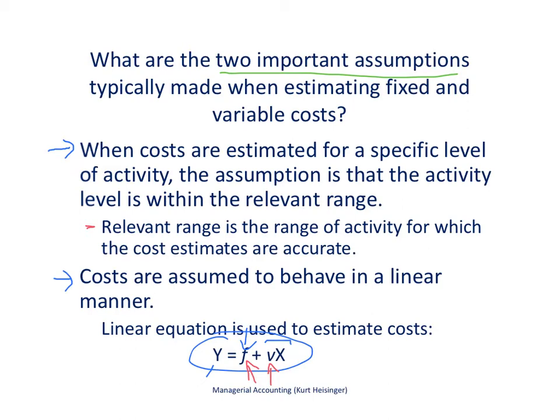Sometimes that's not the case. It may be that our variable cost per unit will change if we have a change in level of production. It might be that we can negotiate a better deal if we increase our production and our direct material cost per unit are lower. Or if our production goes down, the cost might be higher. But the idea here is that we are assuming all costs will behave in a linear manner, which makes estimating costs much easier — we just want to make sure it doesn't distort our estimates.